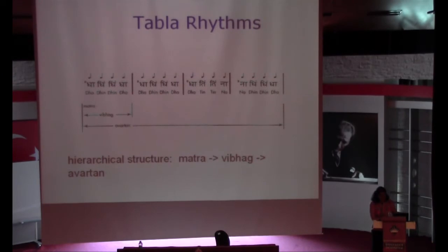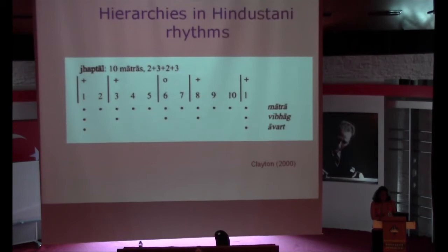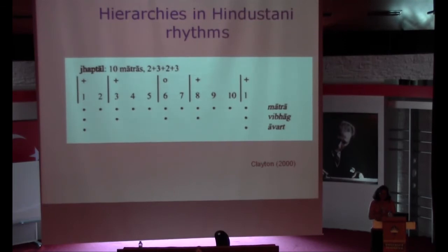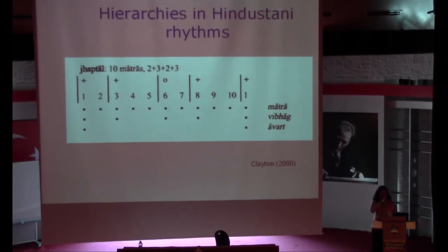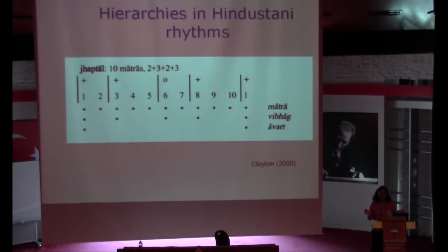That was a fairly symmetrical structure. We also have rhythms like the 10-beat jhaptal, broken into 2-3, 2-3 — dhin-na, dhin-dhinna, dhin-dhinna. The matras are isochronous, which gives a pulse you can pick up in a beat algorithm, but the vibhags are unequal because of this additive aspect of the rhythm. The avartan then repeats after 10 beats.